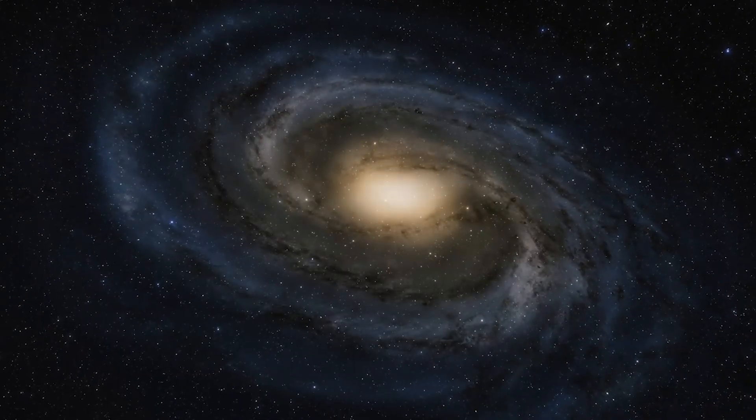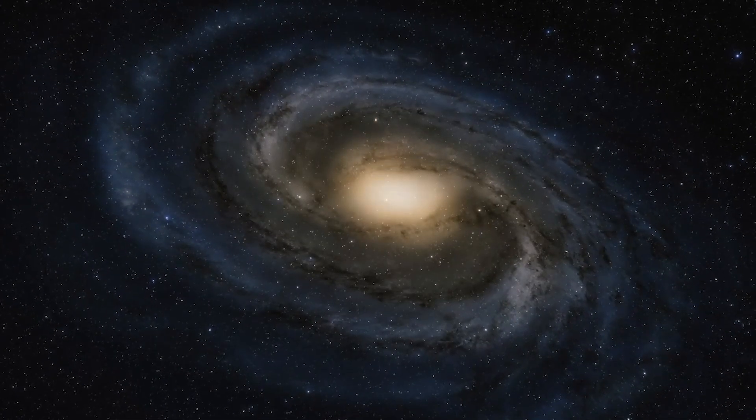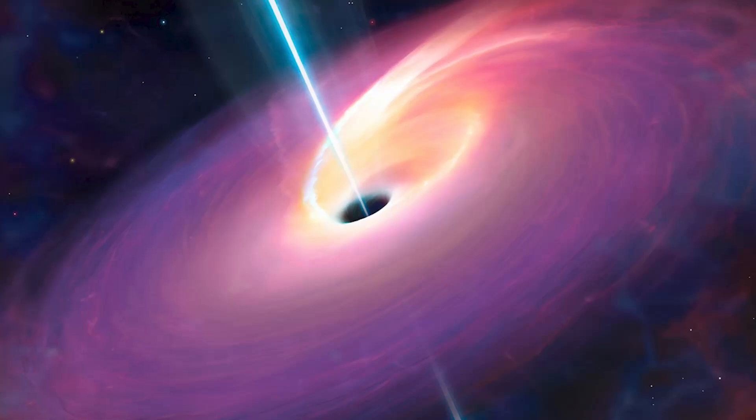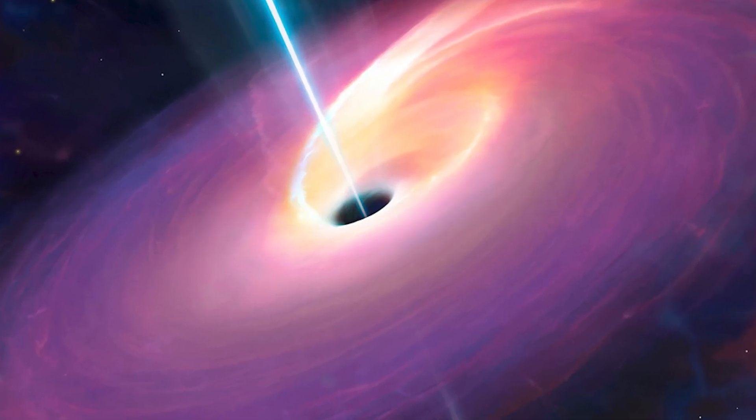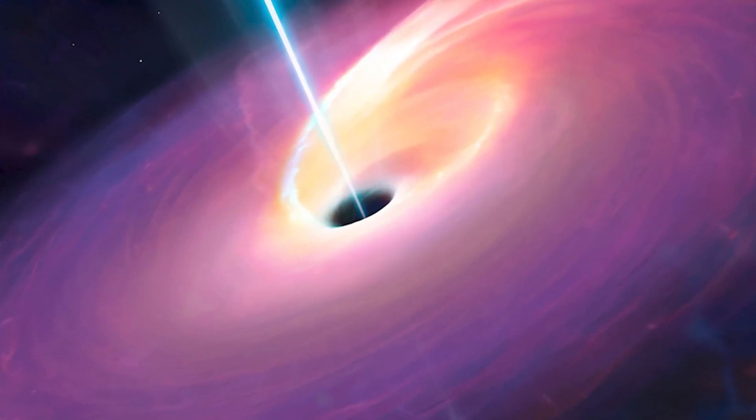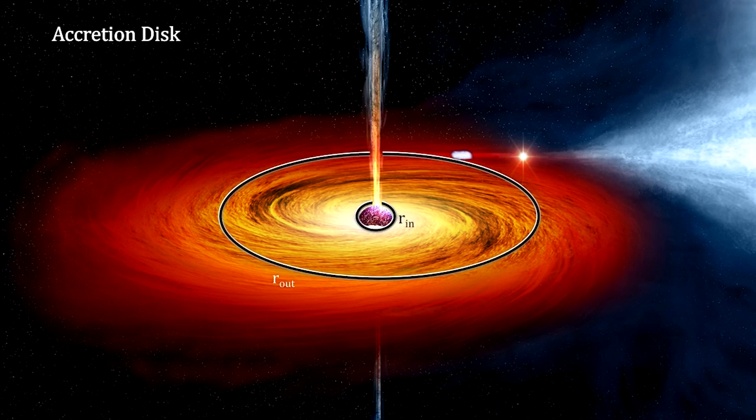Particularly in our own Milky Way galaxy, finding these star-forming disks, also known as accretion disks, is like looking for a needle in a haystack. Why? Because accretion disks of young stars are typically hidden from view by warm, dense clouds of gas and dust.